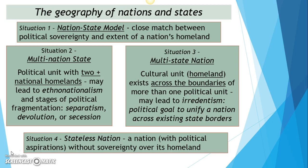With situation one — the nation-state model — the classic example, probably one of the best examples, is Japan. Looking at the demographic numbers, something like 95% or more of Japan is ethnically Japanese, and most Japanese people in the world live in Japan. So there's a close match between the extent of the homeland — the Japanese islands — and political sovereignty.